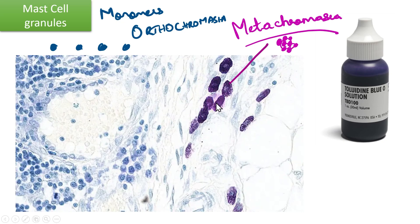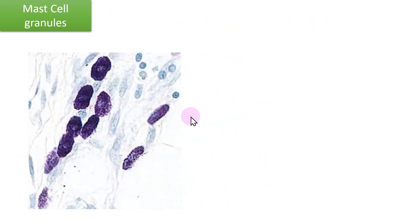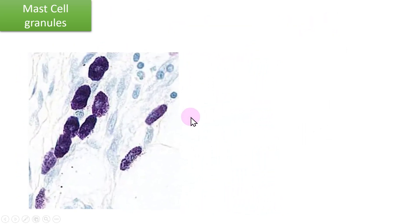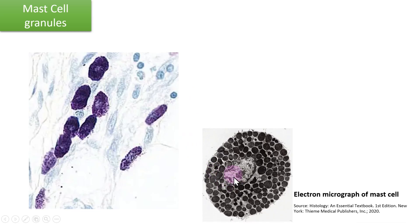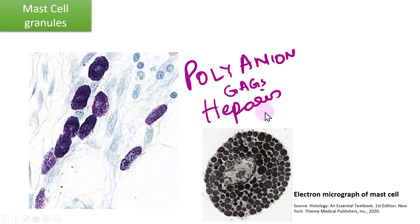Now what is the peculiarity of mast cells and these granules to make them metachromatic? If you look at the mast cell granules in a transmission electron microscopy, you can see the mast cell — this is the nucleus — and it is studded with a lot of granules. The composition of the granules is that they are glycosaminoglycans containing heparin as well as heparin sulfate.